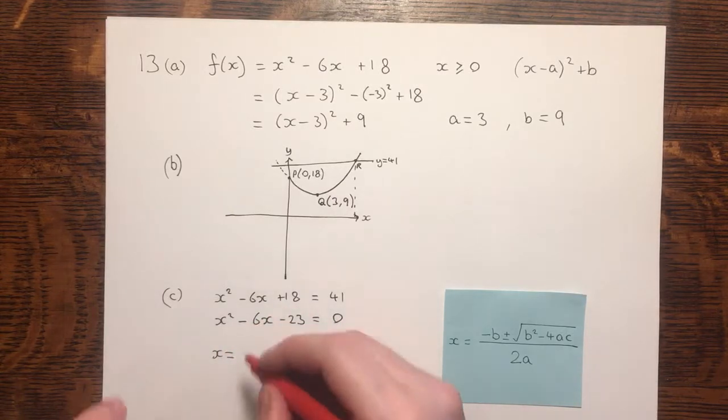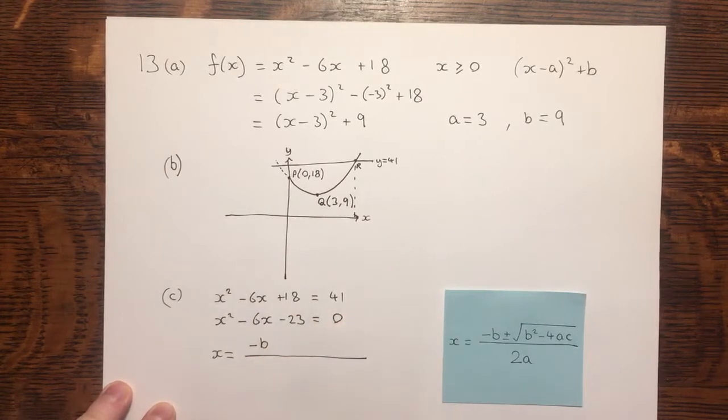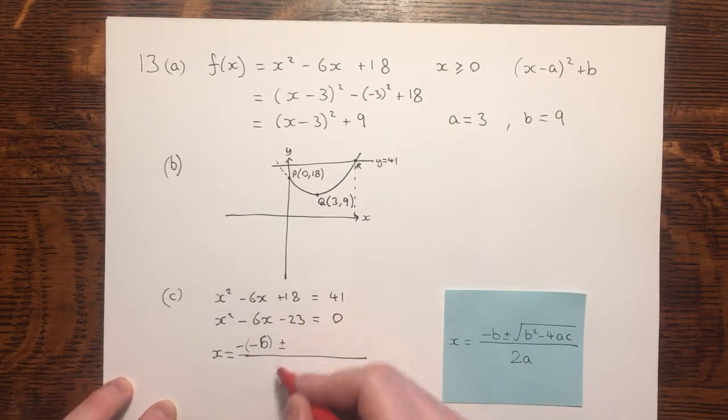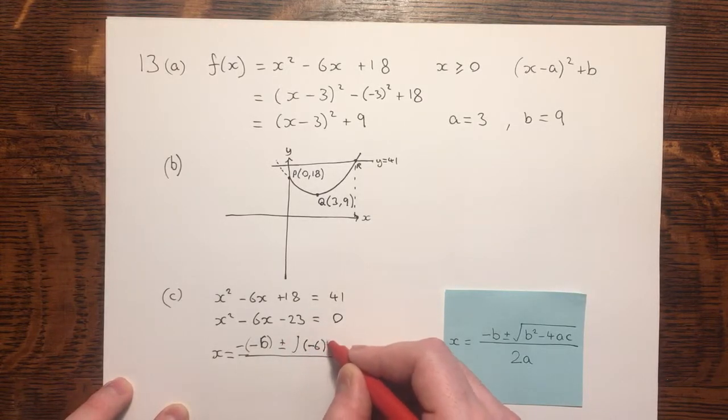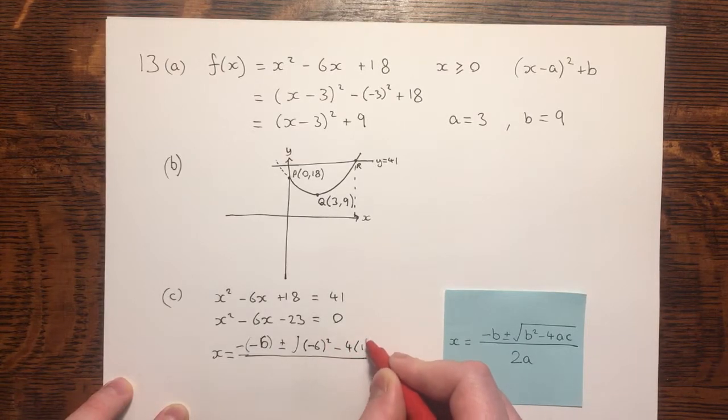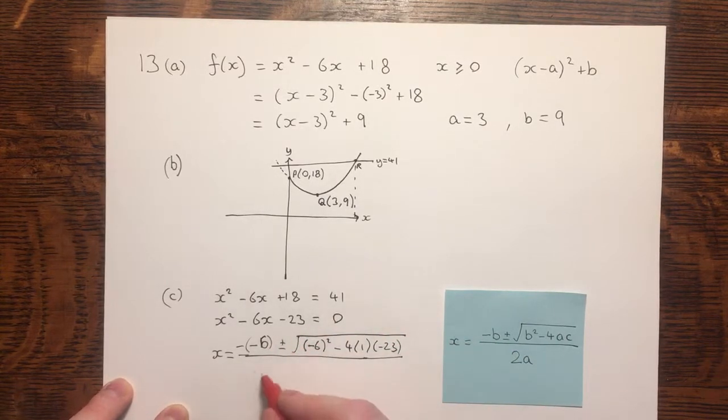x will be equal to minus b. I'm sorry, that was meant to be minus 6, but minus minus 6. x plus or minus the square root of, again, b squared minus 4. a is 1, and c is minus 23. And we're dividing by 2 times a, which is 1.